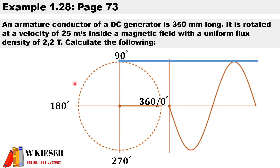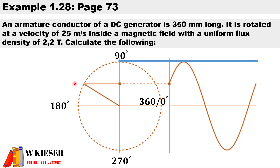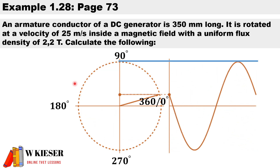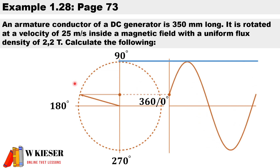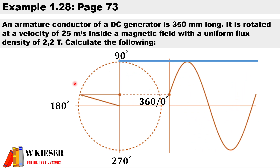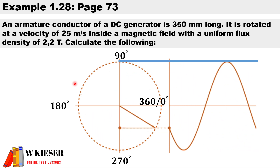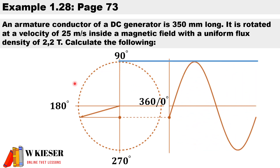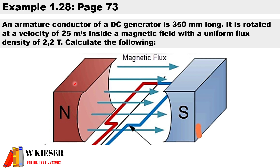In this calculation, an armature conductor of a DC generator is 350 millimeters long. It is rotated at a velocity of 25 meters per second inside a magnetic field with a uniform flux density of 2.2 tesla. Imagine a permanent north pole magnet and a permanent south pole magnet — as the coil rotates 360 degrees it cuts through the lines of flux running from north to south, which induces our EMF.